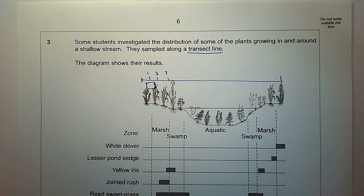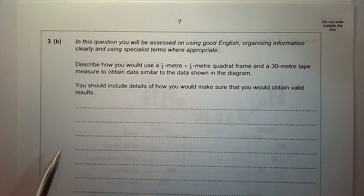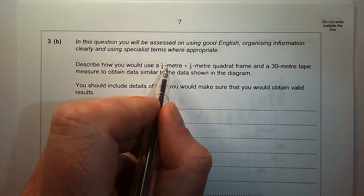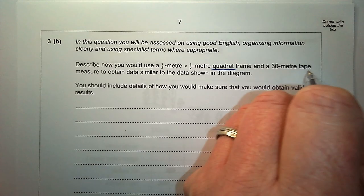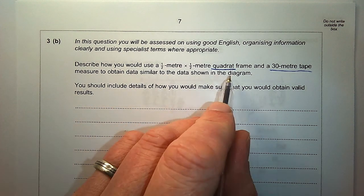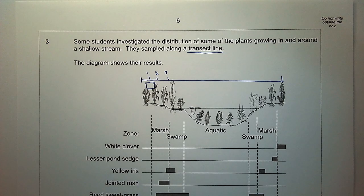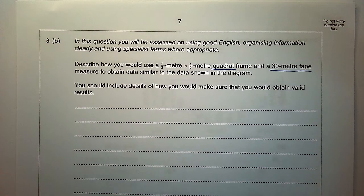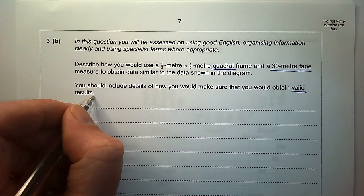The question asks: describe how you would use a half-meter by half-meter quadrat and a 30-meter tape to obtain data similar to the data shown in the diagram. They're trying to find the distribution of plants across this shallow stream. You should include details of how you can make sure that you obtain valid results.